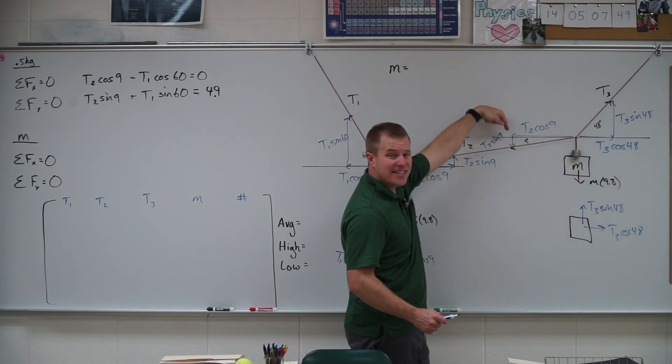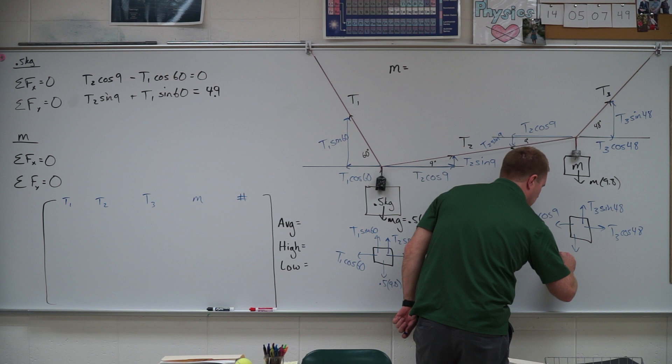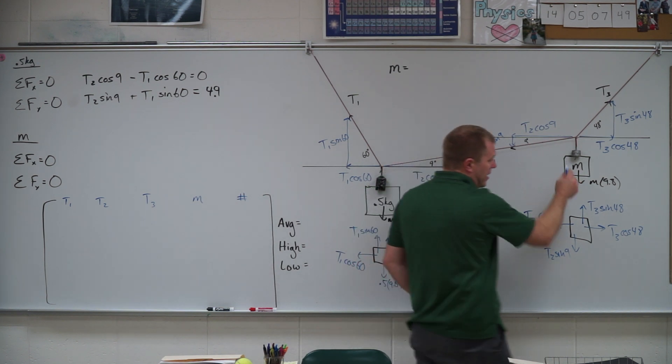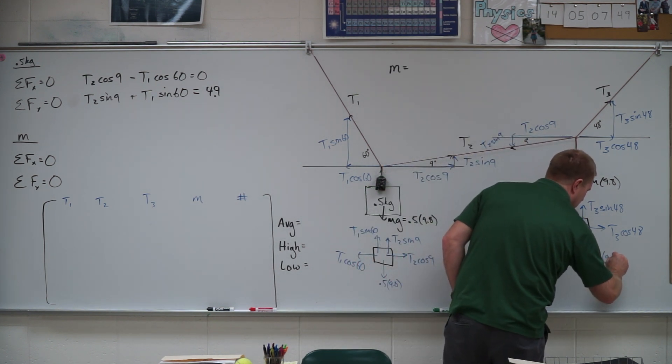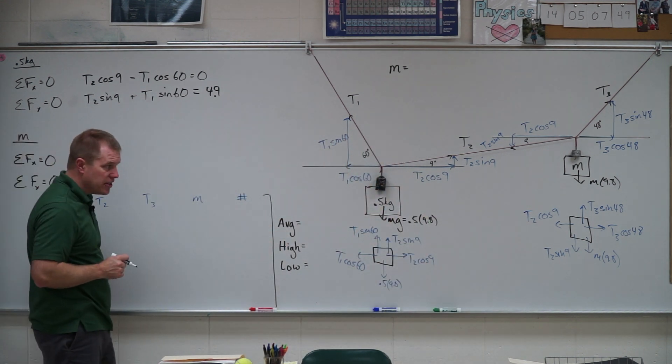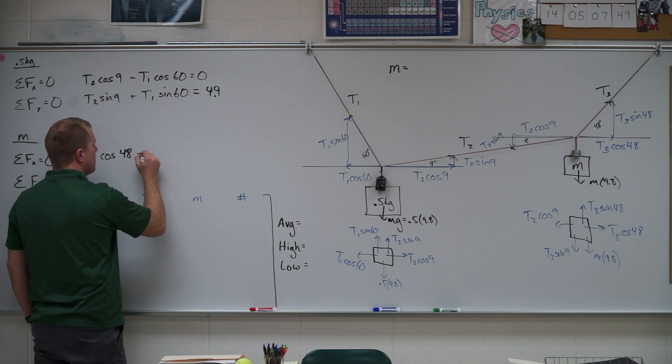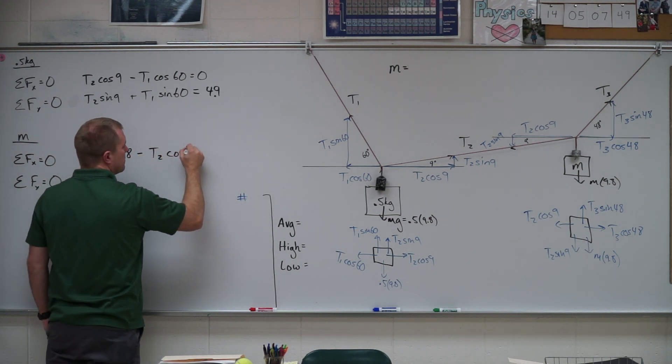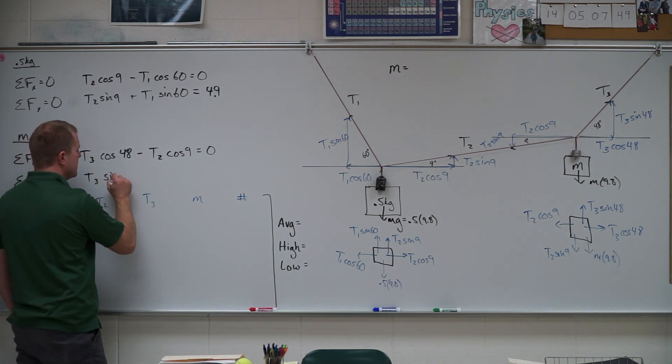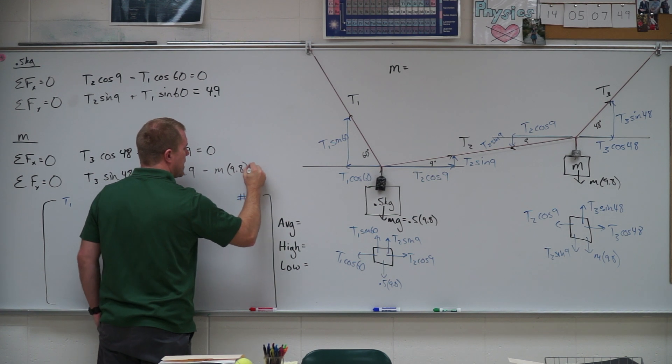Now, I'm watching these arrows. Notice this T2 sine of 9 is actually pointing down. So when I get to that, I need to make sure I have it in the correct direction. So that T2 sine of 9 is actually pointing down. That's going to influence how I write that equation over there. And I also have this unknown mass times 9.8. So now I need to come back over here and generate those equations. So in my x direction I have T3 cosine of 48 minus T2 cosine of 9 equals 0. And in the y direction I have T3 sine of 48 minus T2 sine of 9 minus m times 9.8 equals 0.